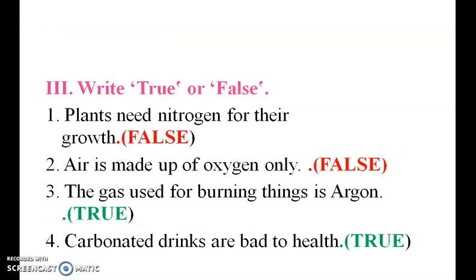True or False: Plants need nitrogen for their growth — it is false; they need carbon dioxide for photosynthesis. Air is made up of oxygen only — that is false. The gas used for burning things is argon — that is also stated as true.